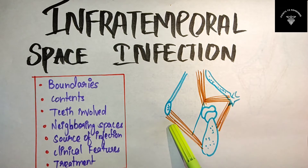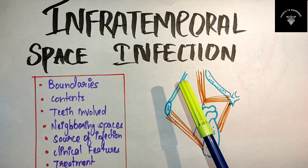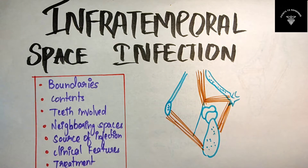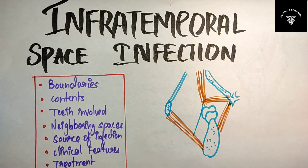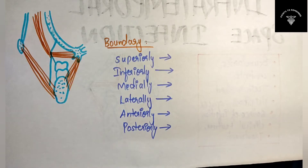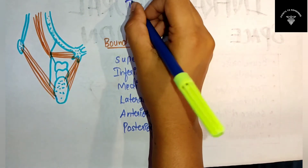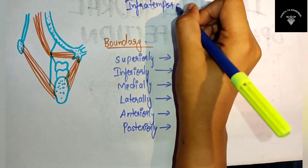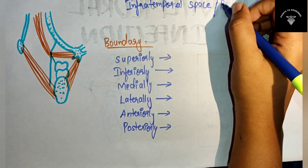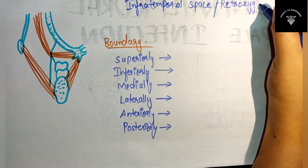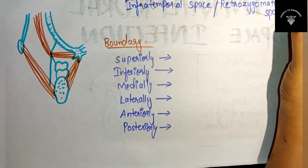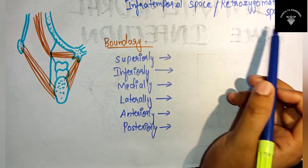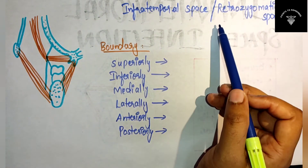The infratemporal space is also called the retrozygomatic space, as it is partly situated behind the zygomatic bone — that's why it is known as the retrozygomatic space.